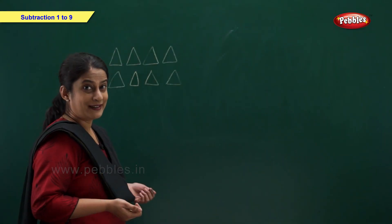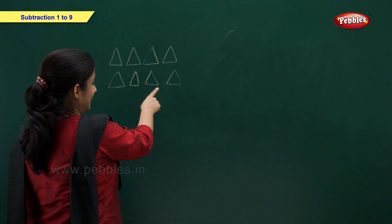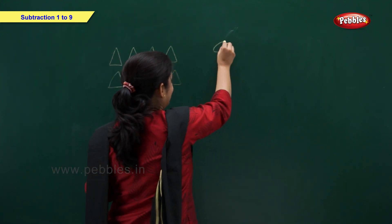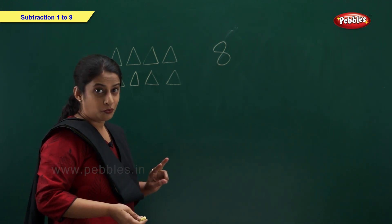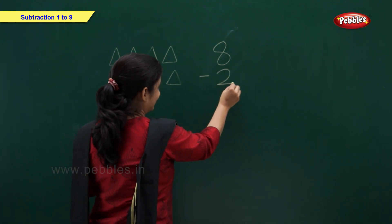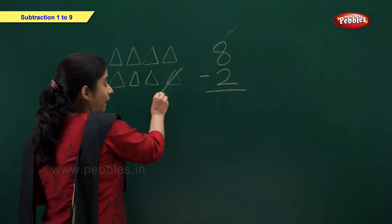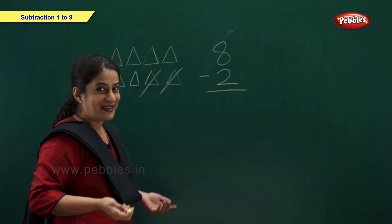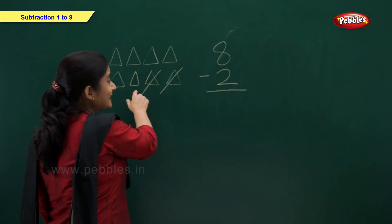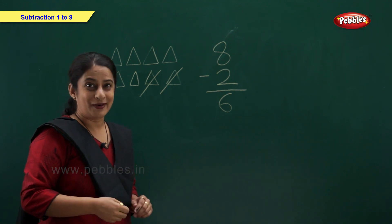I have 8 triangles. Let's count: 1, 2, 3, 4, 5, 6, 7, 8. I want to remove 2. So minus 2. Now let's remove 2 triangles: 1 and 2. So how many left? 1, 2, 3, 4, 5, 6. So 8 minus 2 is equal to 6.